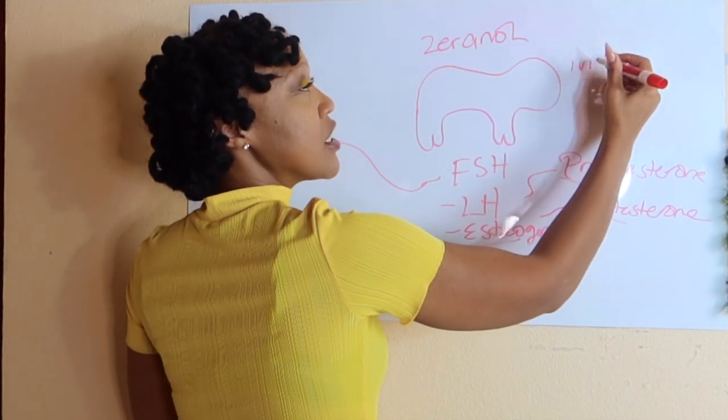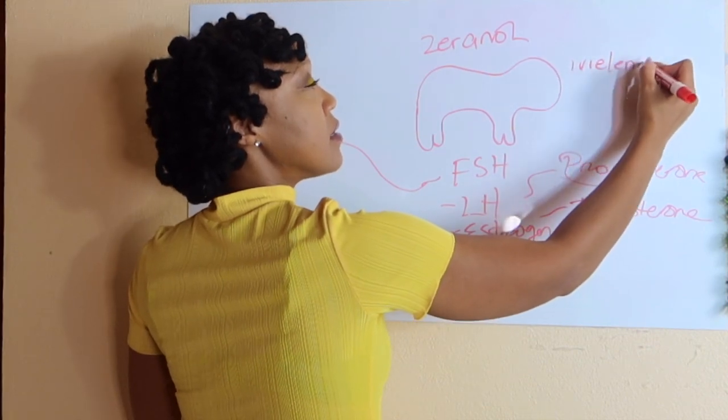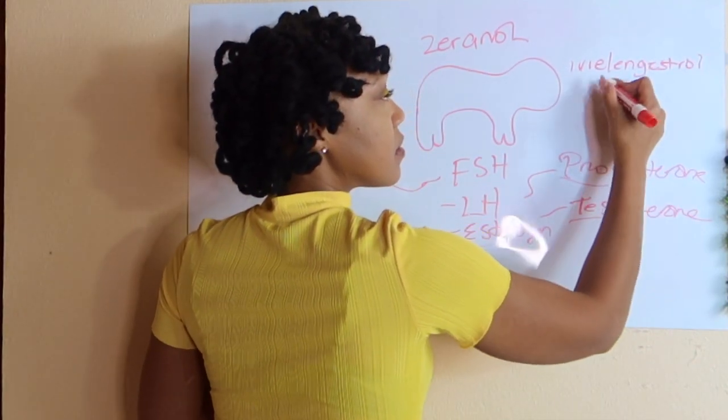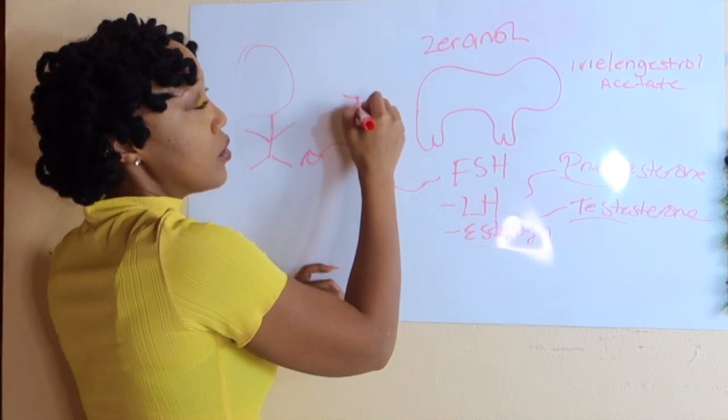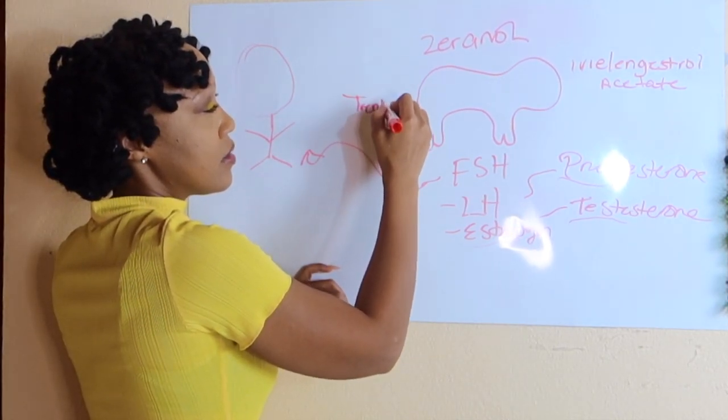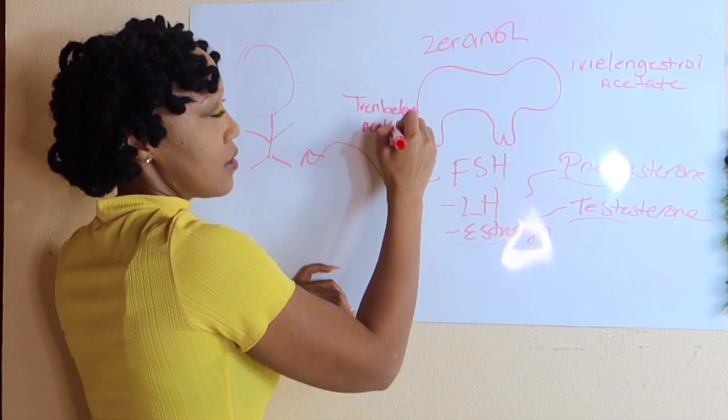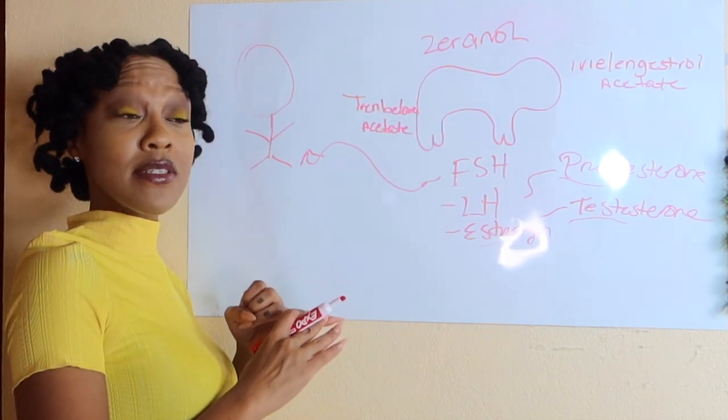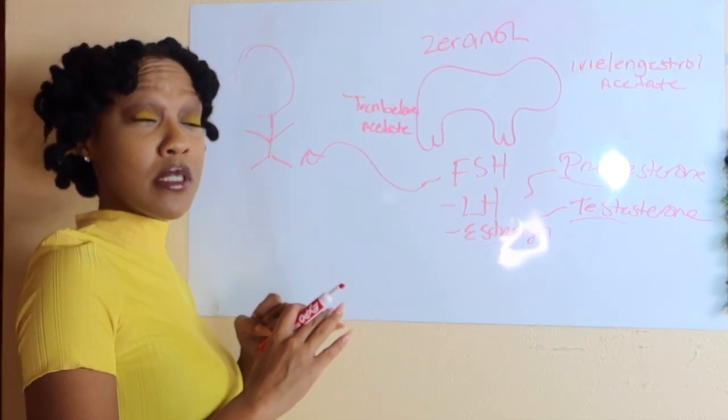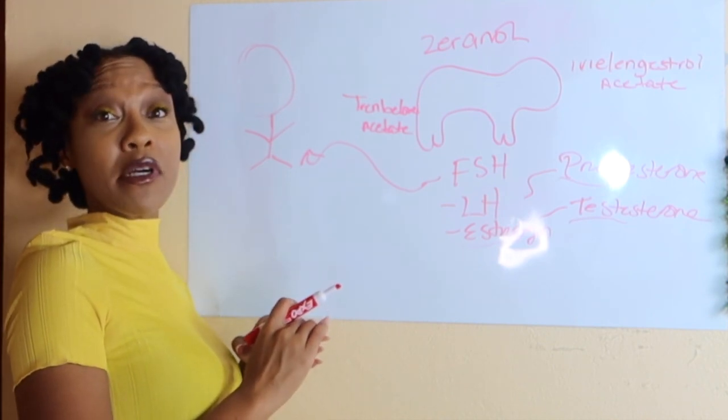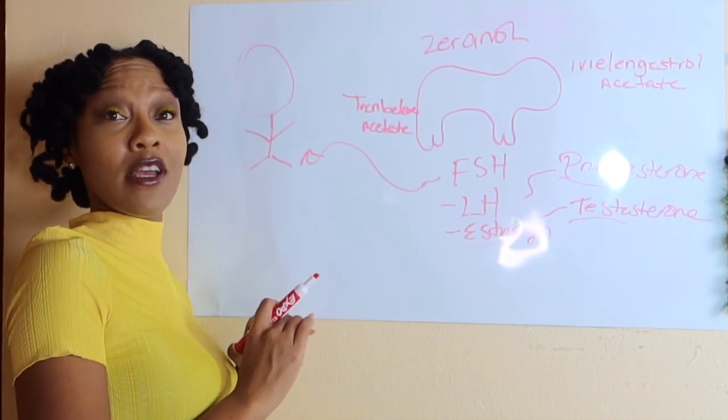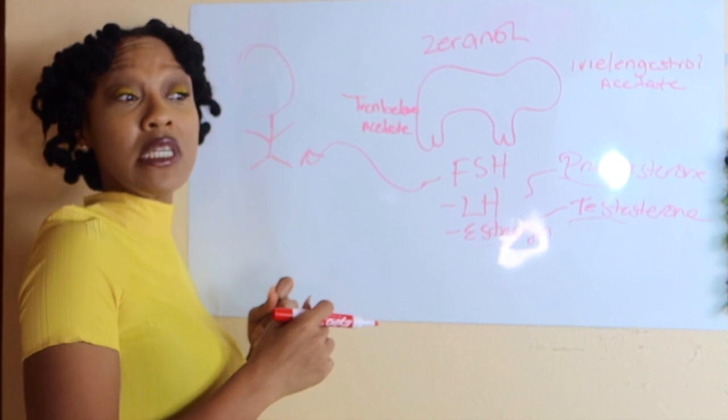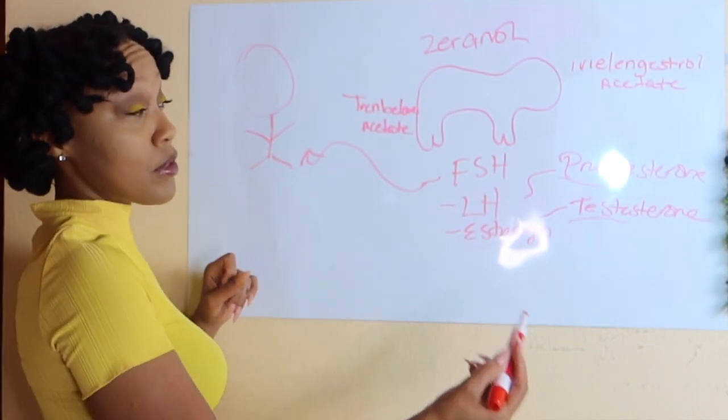Zeranol, melengestrol acetate, and then Trenbolone acetate, so that they can produce faster, produce in larger quantities, and so that they can be much bigger, so that you can have enough meat to eat.